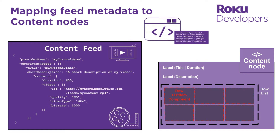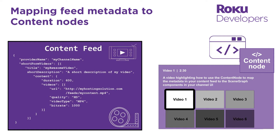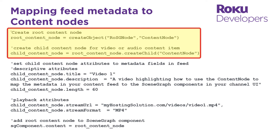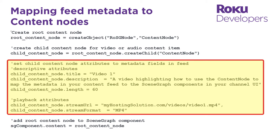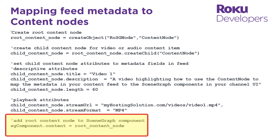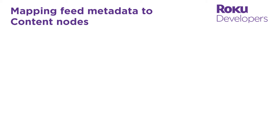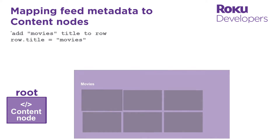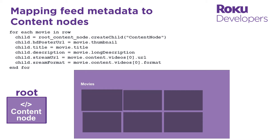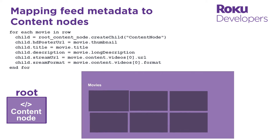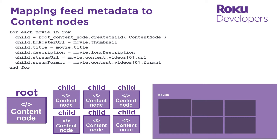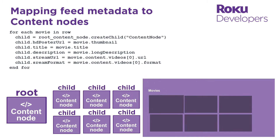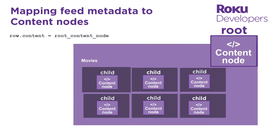You can map the metadata in your feed to a scene graph component in a few steps. Generally, you create a content node, set its attributes to the metadata in your feed, and then add the content node to the UI component. For example, to populate a grid on your channel's homepage with your movie catalog, you create a single root content node, iterate through the content feed to add the row title, and then the thumbnail image, title, description, and other descriptive attributes for each movie in the row. The metadata for the movies in the row are stored in a series of child content nodes, where each child content node represents an individual movie. Finally, you add the root content node to the grid.